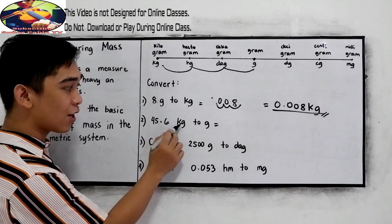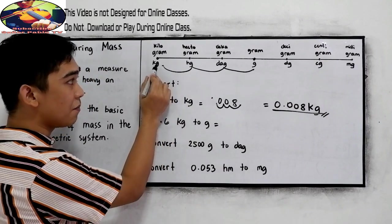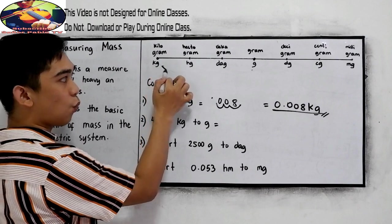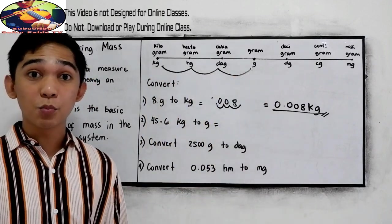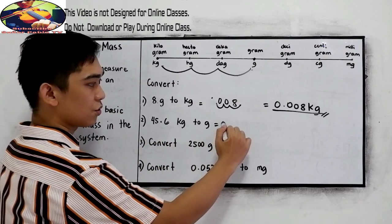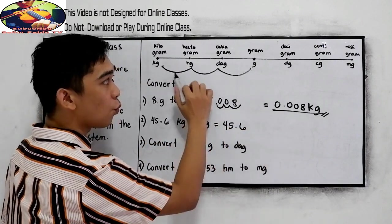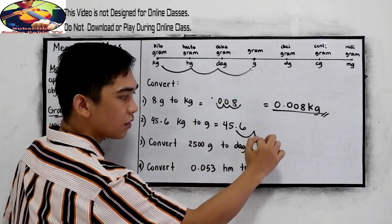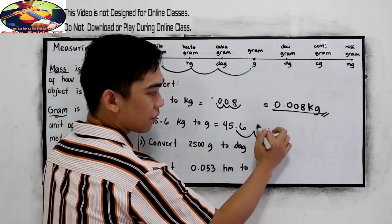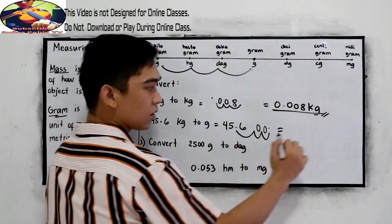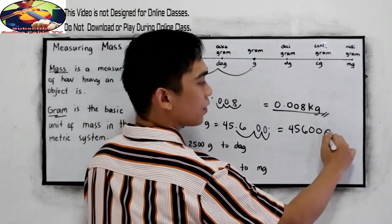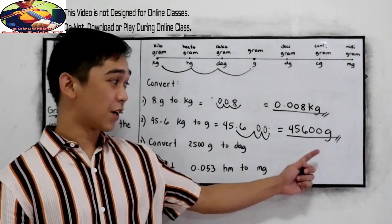Again, first step, locate kilograms. Kilograms going to grams, one, two, three. We need to move three times to the right. So the decimal point is located here. So write 45.6, move one, two, three. Period. So our answer will be, write zeros in our hollow, 45,600 grams. That would be our answer.